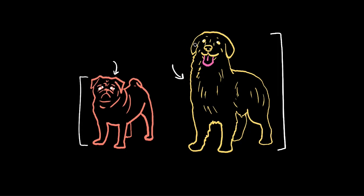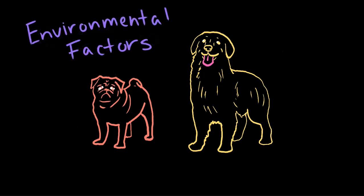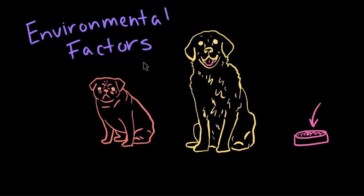These traits are largely determined by which genes each breed of dog has — in other words, by genetic factors. But dogs are also influenced by environmental factors, too. For instance, how much food they get as they grow helps determine their size. And what they learn from other dogs and from people helps determine their behaviors, like when you teach your dog a new trick.